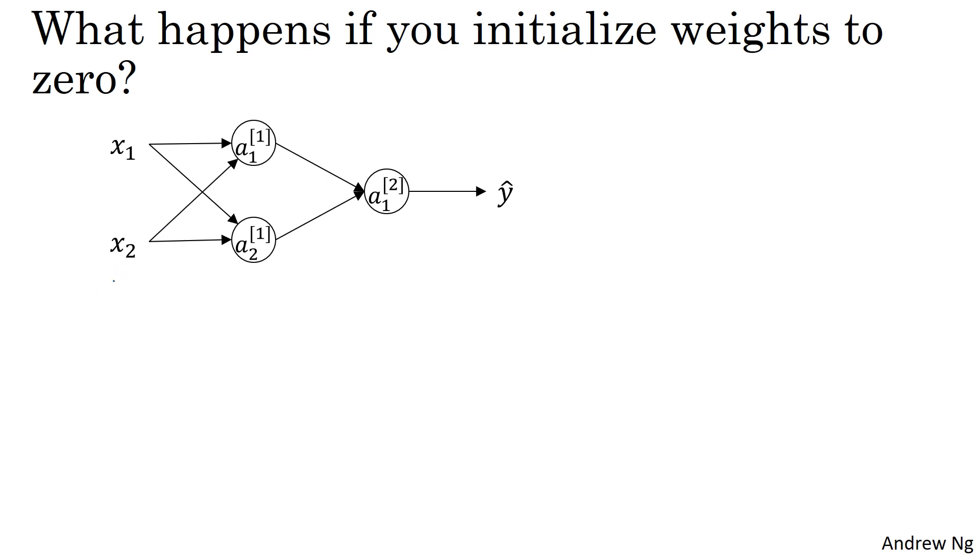So you have here two input features, so n0 is equal to two and two hidden units, so n1 is equal to two. And the matrix associated with the hidden layer, or w1, is going to be two by two. Let's say that you initialize it to all zeros, so 0, 0, 0, 0, a 2 by 2 matrix. And let's say b1 is also equal to 0, 0. Turns out initializing the bias terms b to zero is actually okay, but initializing w to all zeros is a problem.